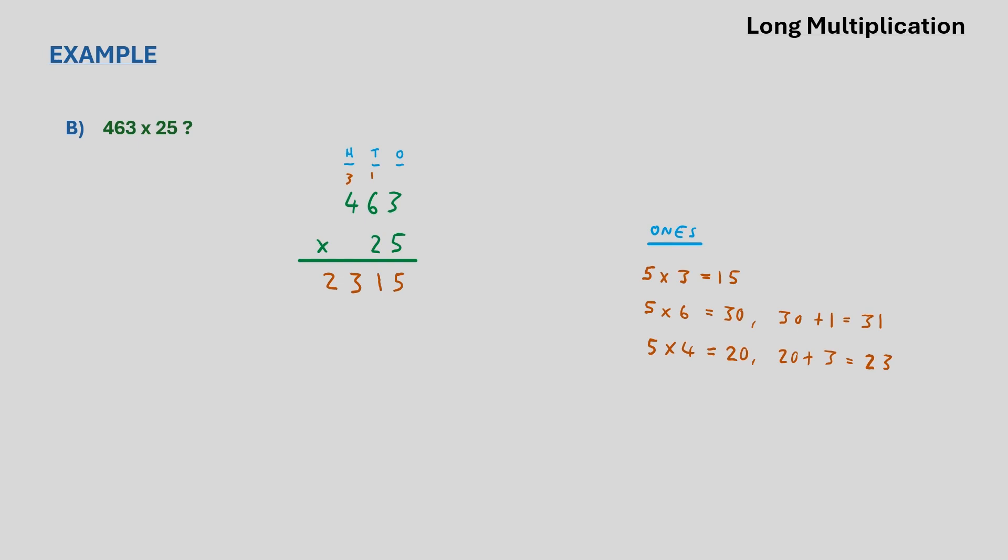Now before we do the lower tens digit multiplication, we do the same as we did with the first example, where we place a zero in the next row before multiplication and also erase any digits above that were carried over. Now we can proceed with the multiplication of 2 by the three top digits, again performing any carrying where necessary.